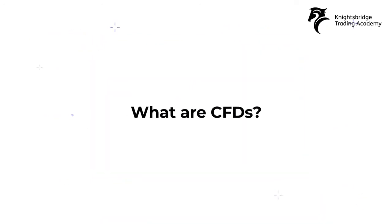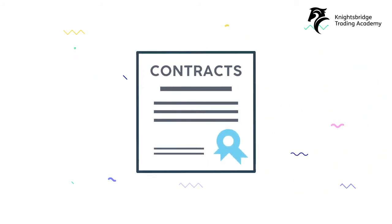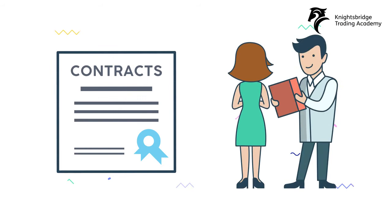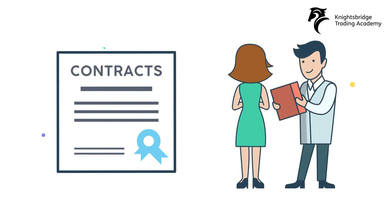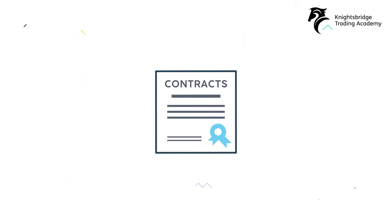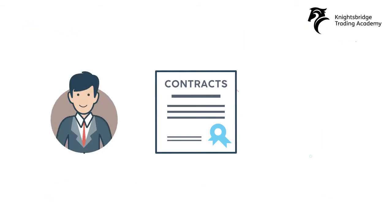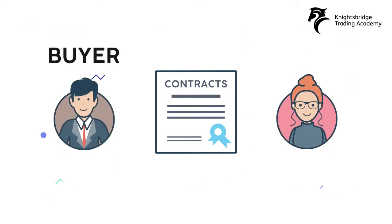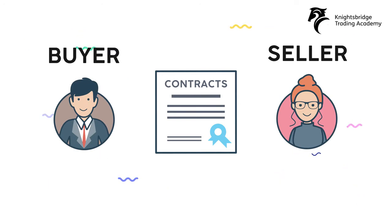What are CFDs? CFDs stand for Contracts for Difference and allow a trader to short or sell financial instruments. A Contract for Difference is a contract between two parties, typically described as buyer and seller, stipulating that the seller will pay to the buyer the difference between the current value of an asset and its value at the contract time.